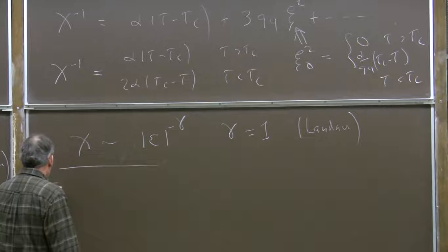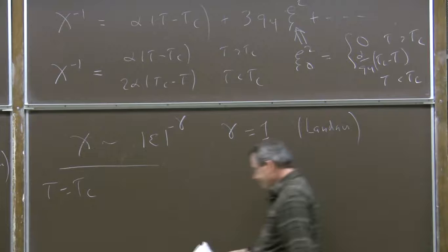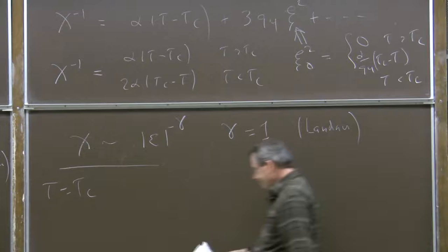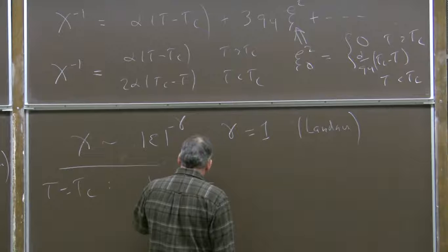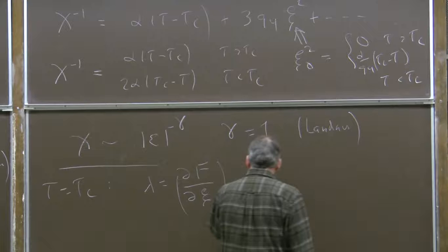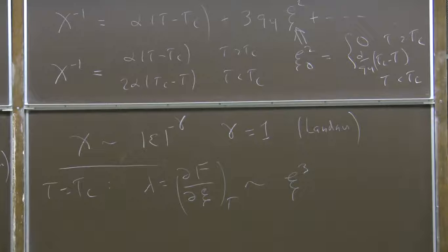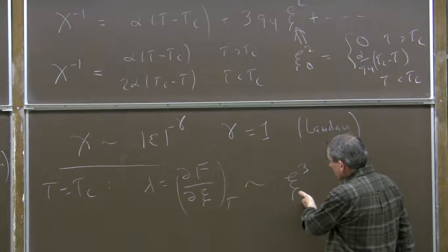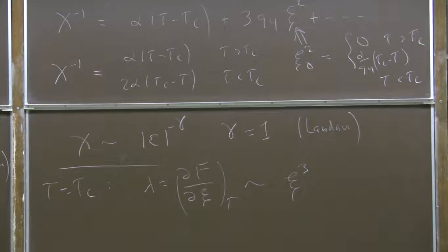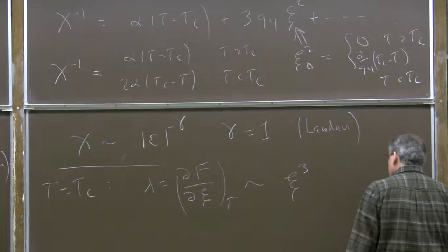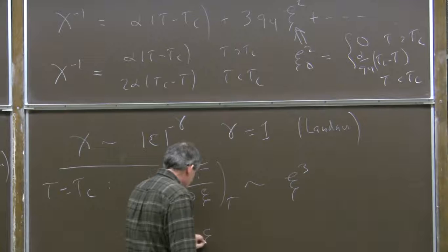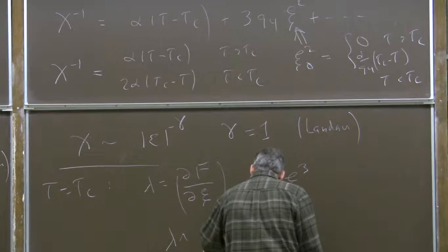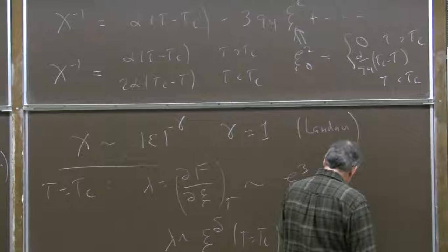When we consider the response when the order parameter is small, it's psi cubed. So there's a prediction for the behavior of the equation of state at the critical temperature: the applied field goes like the order parameter cubed. In general, the exponent relating the two is called delta, and Landau theory makes a prediction for delta, which is three.